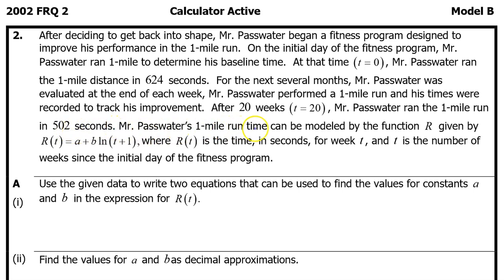Mr. Passwater's one-mile run time can be modeled by the function R, given by R(t) = a + b ln(t + 1), where R(t) is the time in seconds for week t, and t is the number of weeks since the initial day of the fitness program.